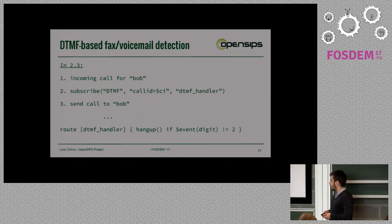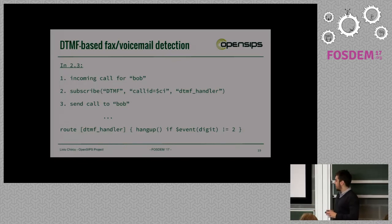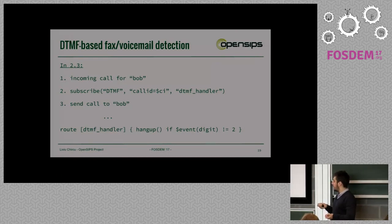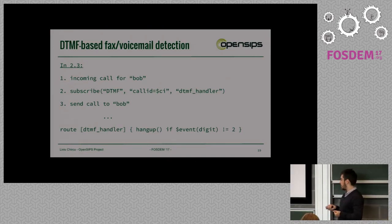Another possible application would be to automatically detect robots on the other side — fax machines or voicemail. With this in mind, we would subscribe to a DTMF event linked to a certain call ID and simply forward the call. When the media server starts sending the events, we will take the appropriate actions — invoke the handler and hang up if it timed out or the wrong digit was pressed.